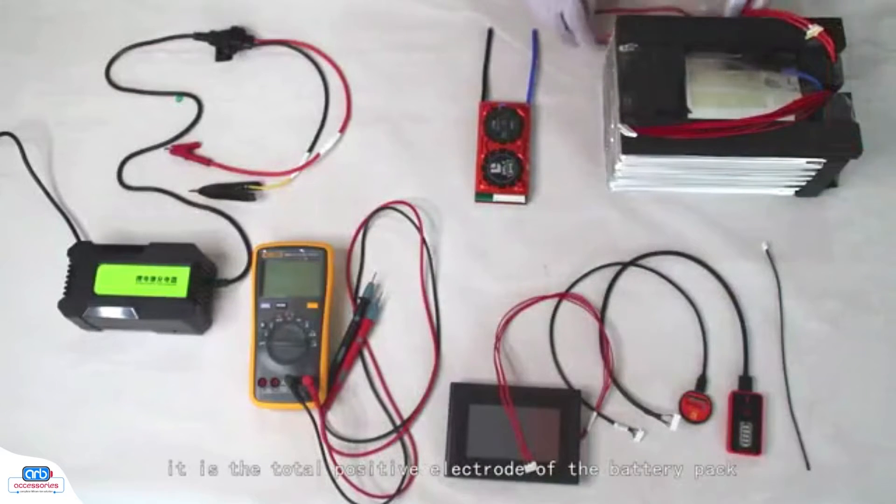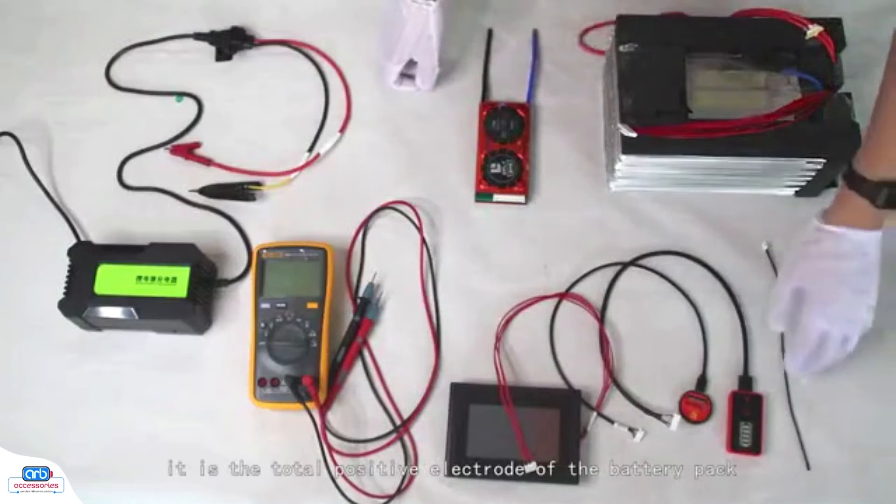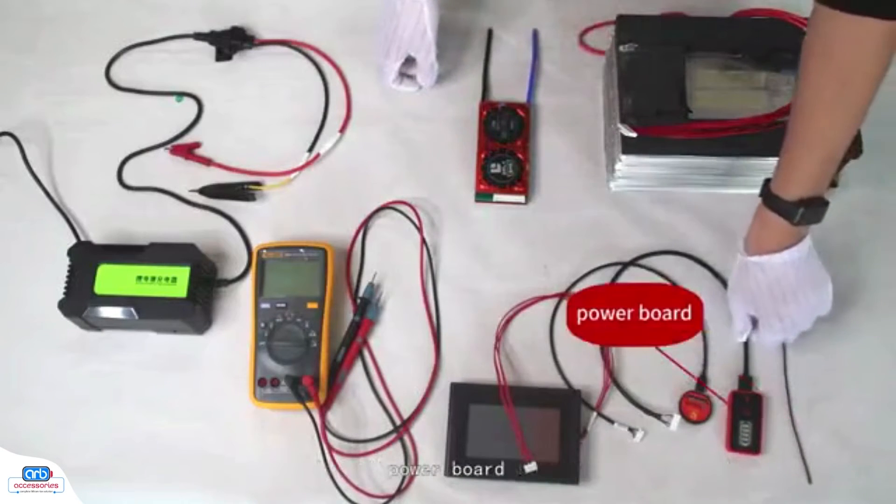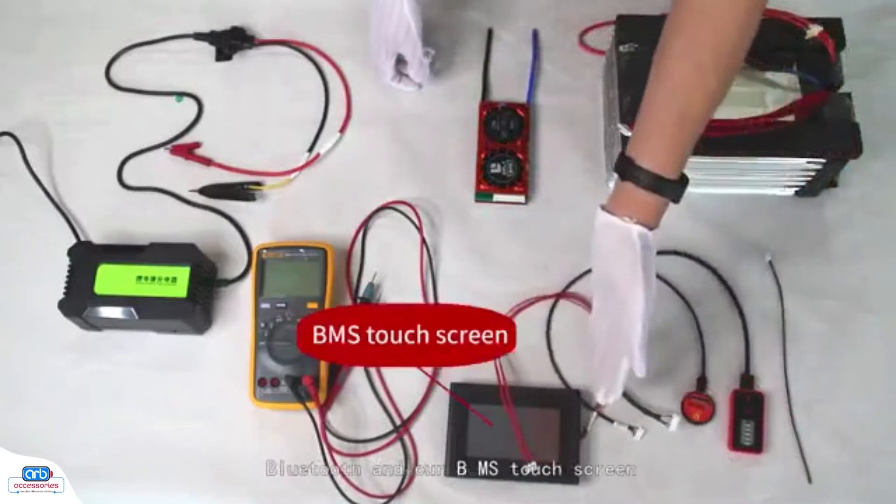And here, it is the total positive electrode of the battery pack, temperature control line, power board, Bluetooth and our BMS touch screen.